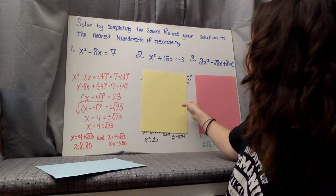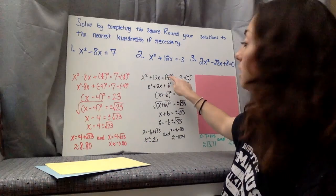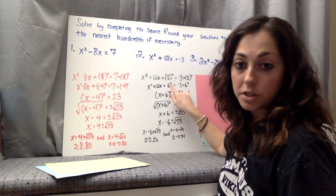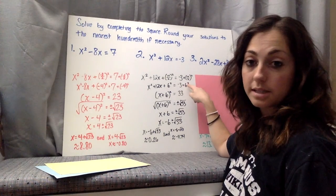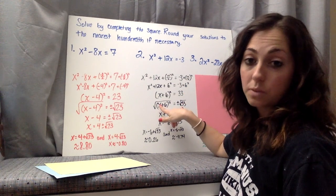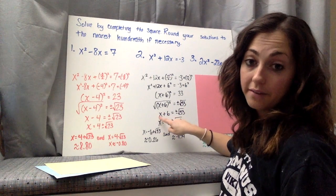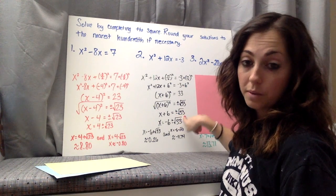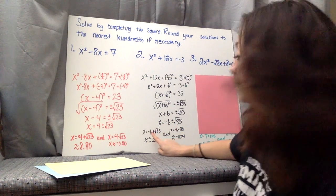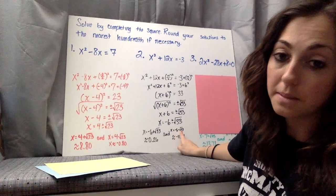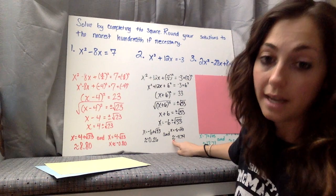Problem 2: we add 12 over 2 squared, which is 6 squared, to both sides. That gives us x plus 6 squared as our square of a binomial. On the right, negative 3 plus 6 squared is negative 3 plus 36, which is 33. Taking the square root of both sides with plus or minus, we get x plus 6 equals plus or minus square root of 33. Subtracting 6, we get x equals negative 6 plus or minus the square root of 33, which is approximately negative 0.26 and negative 11.74.